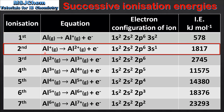For the second ionization energy we are starting with 1 mol of gaseous 1+ ions. When 1 mol of electrons is removed we end up with 1 mol of gaseous 2+ ions. If we look at the electron configuration of the ion formed, we can see that we've lost 1 electron from the 3s sub-level, and the ionization energy has increased to 1817 kJ per mol.